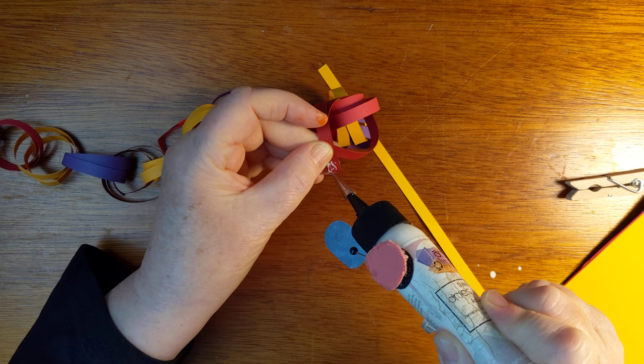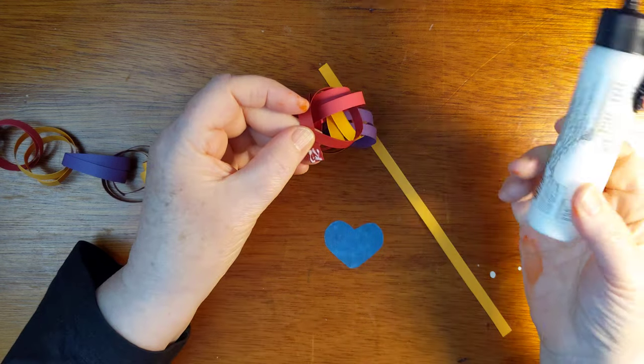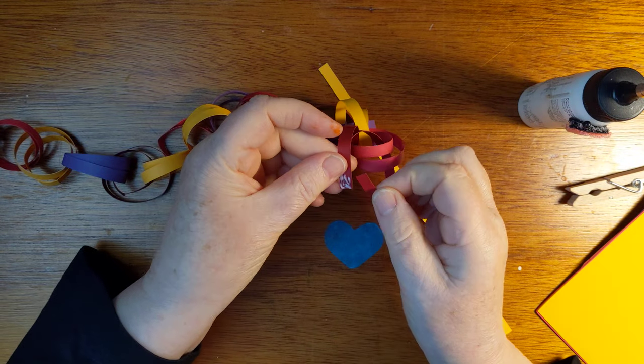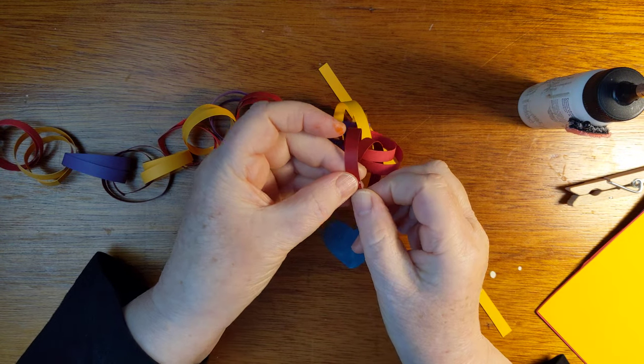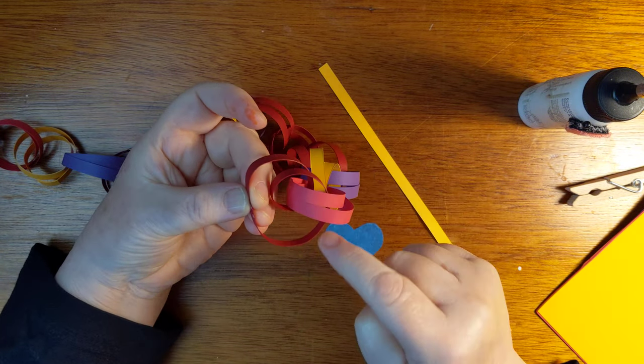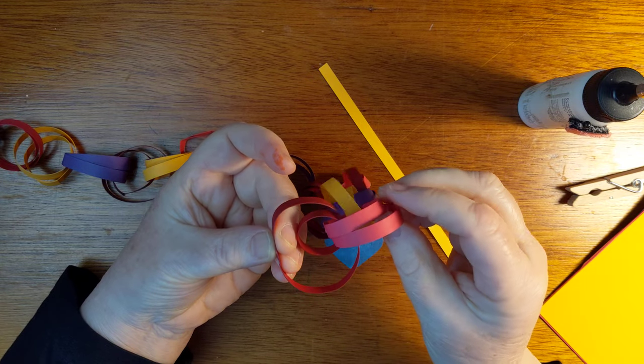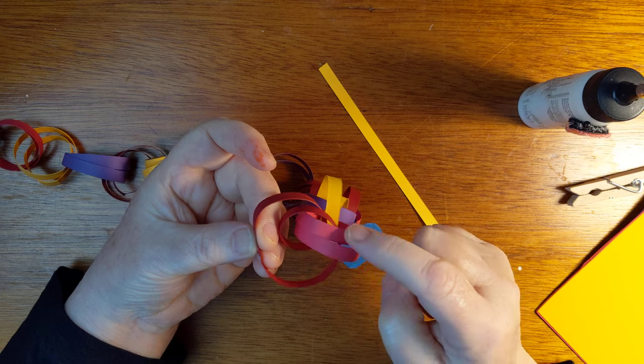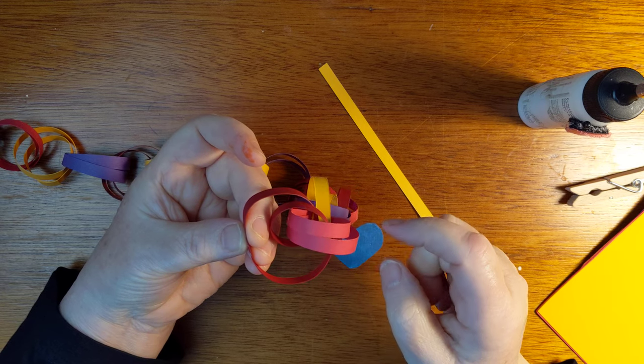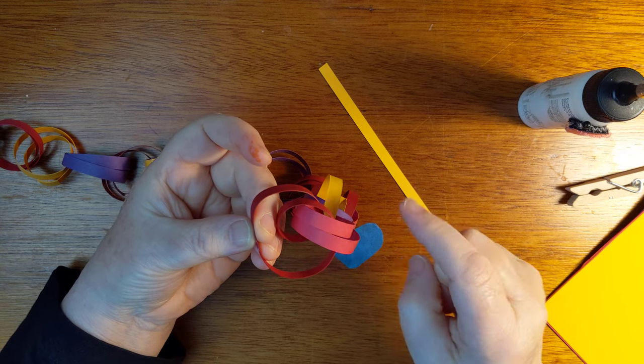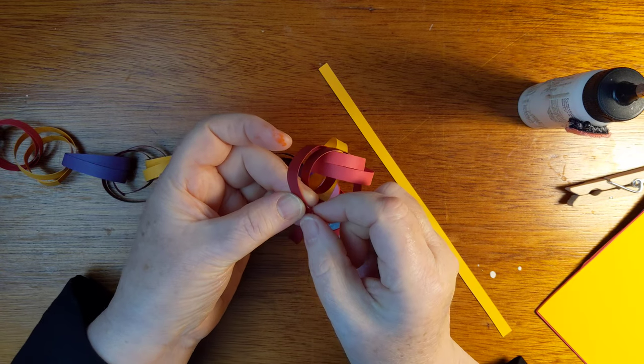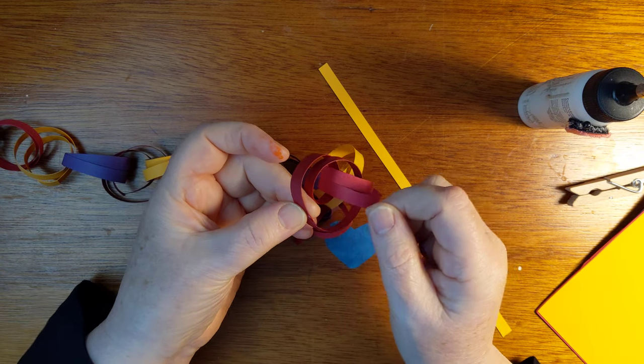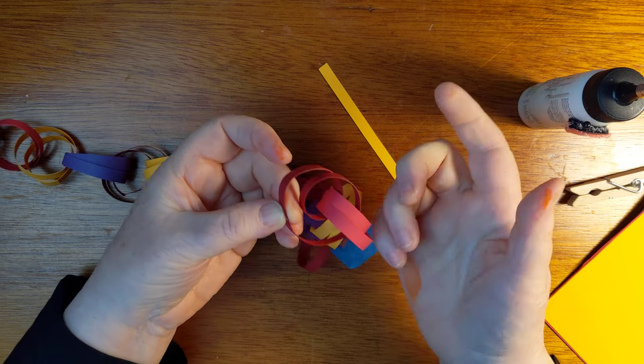So we go through once, bring it around and bring these ends up to meet. And I wanted to say, and I've done this, make sure that when you go through these double loops of the previous link, make sure you go through both of these or else I'll show you in a sec, they sort of come apart.